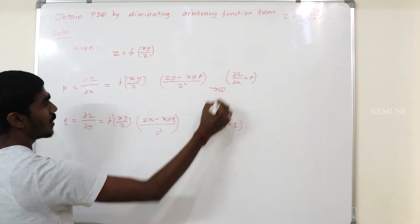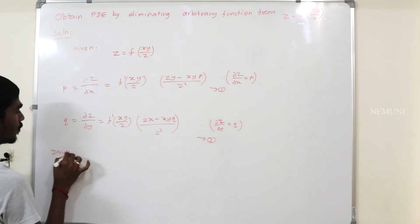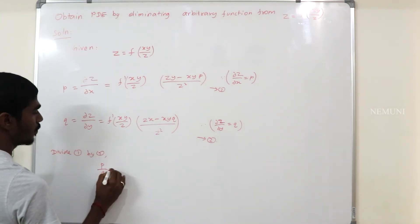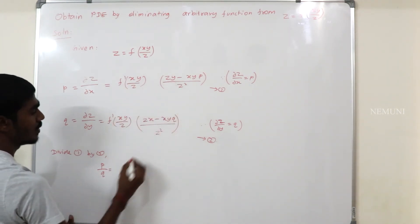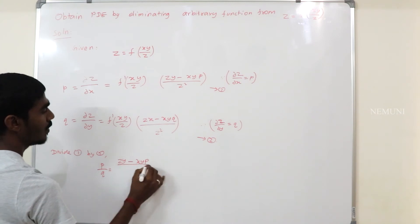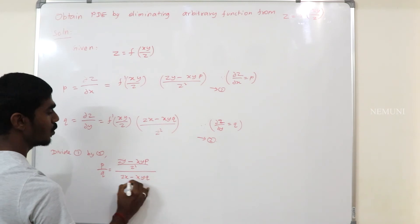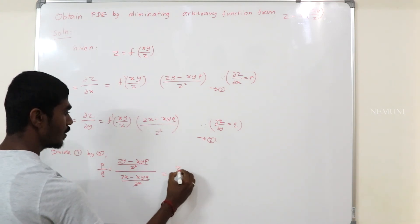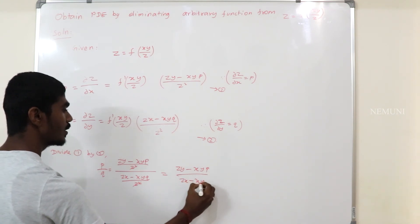Keep this as equation 1 and keep this as equation 2. Divide equation 1 by equation 2. Both functions will get cancelled, giving z·y minus x·y·p divided by z squared, over z·x minus x·y·q divided by z squared. We can cancel the z squared, and we get z·y minus x·y·p divided by z minus x·y·q.